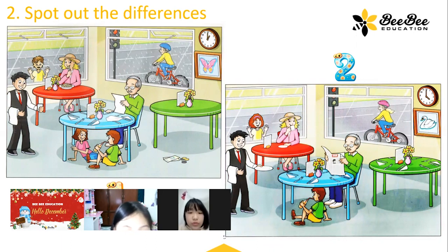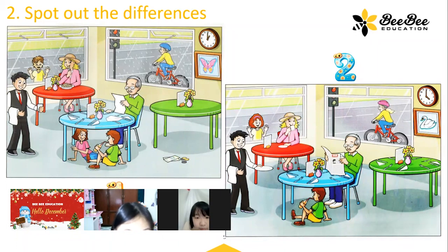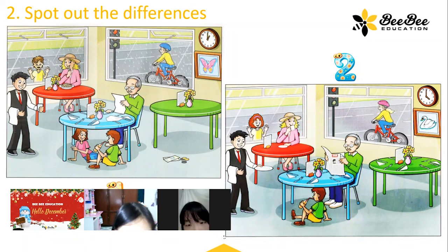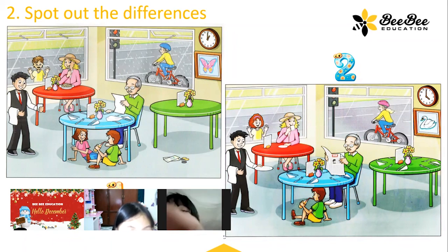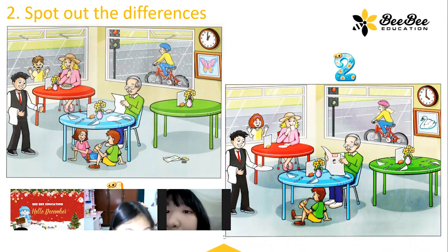Oh, sorry. In my picture, it's a boy. In my picture, there is a girl outside the window. Okay. And in my picture, the old man is reading a paper. In my picture, there is a boy inside the window. In my picture, there is a girl and a boy sitting under the table where the old man is sitting. In my picture, the woman is eating noodles. In my picture, the woman is eating noodles.